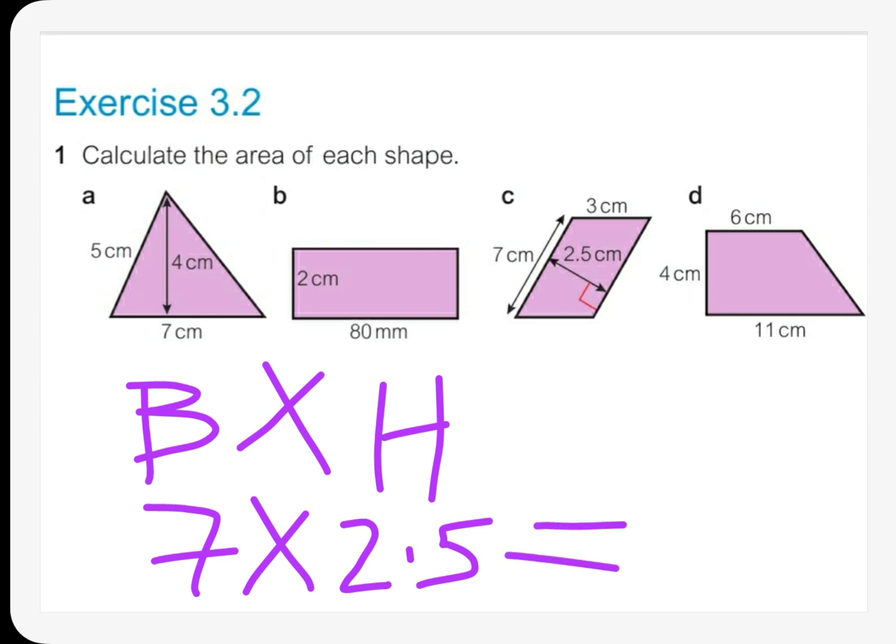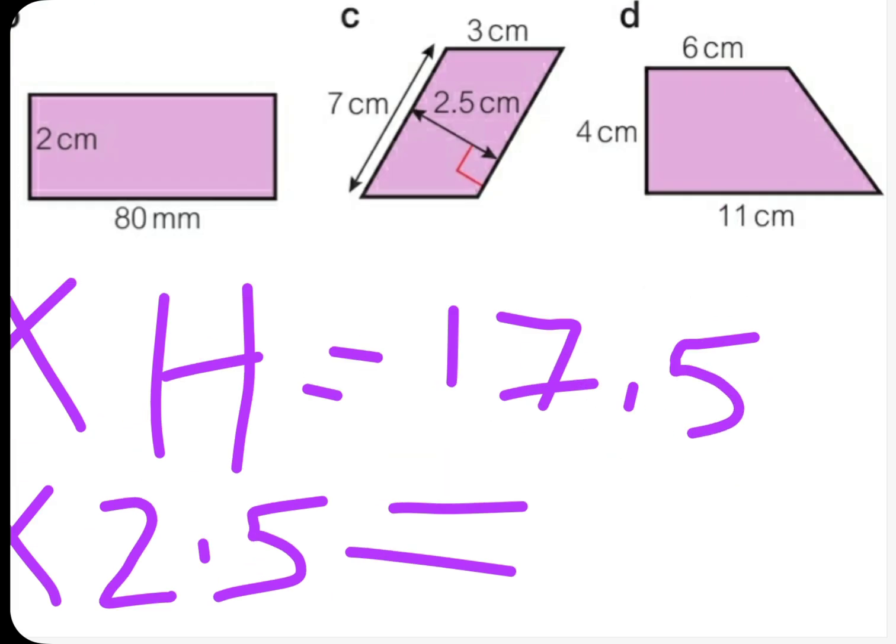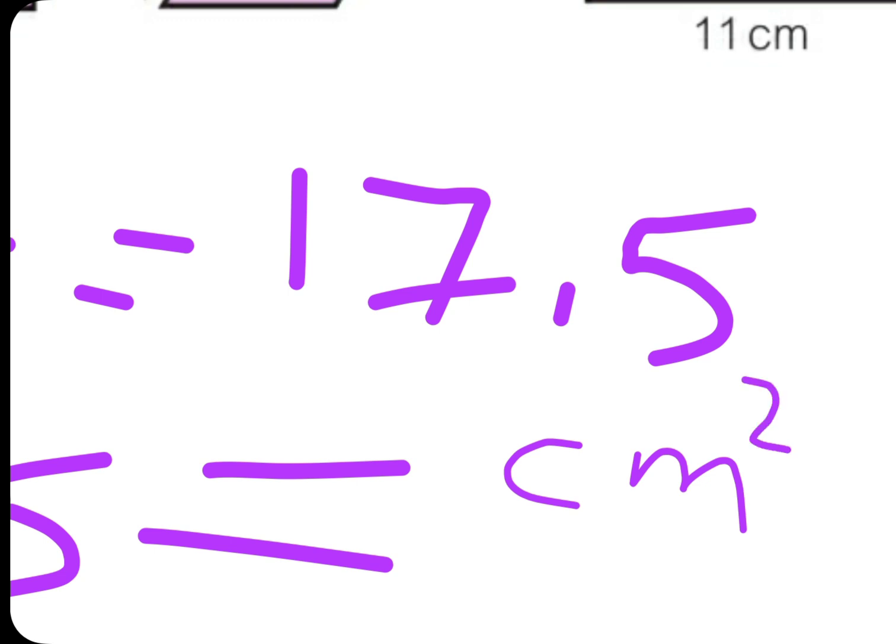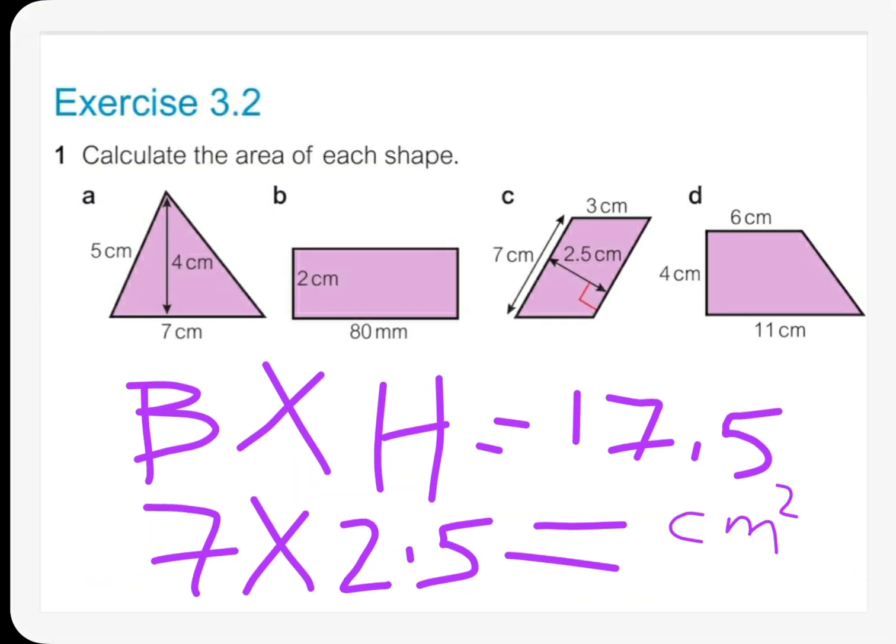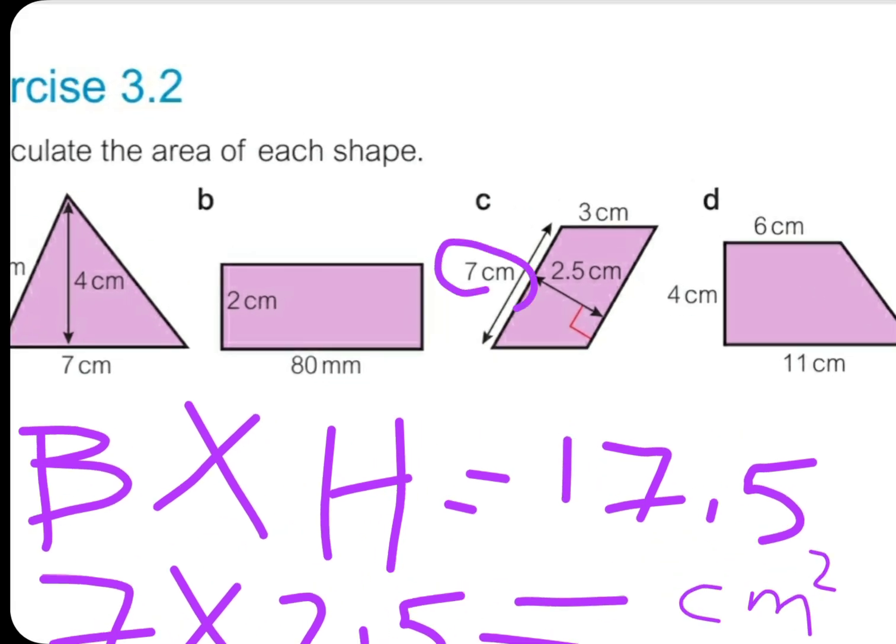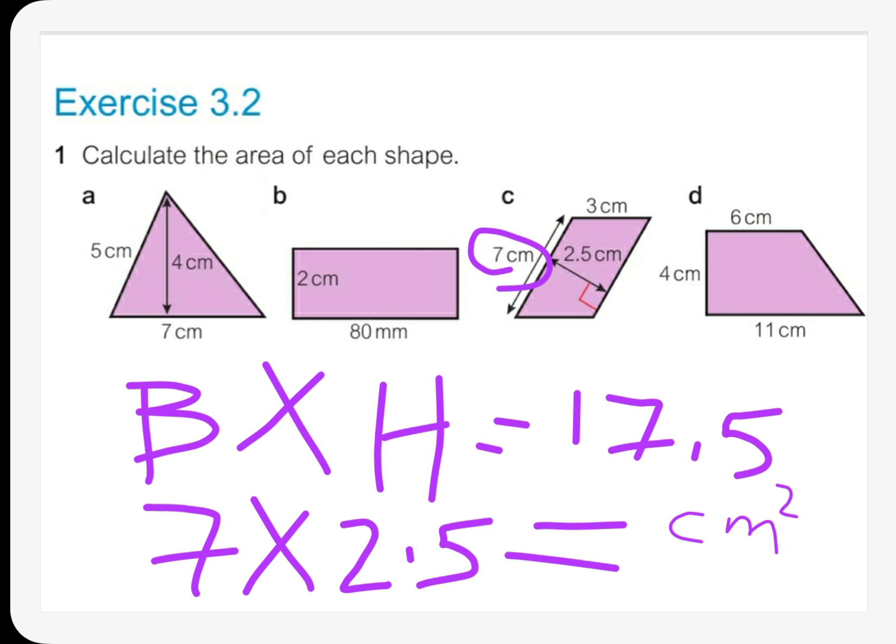It's going to be 17.5. Let me put it here: 17.5, and it has to be centimeter squared. The answer must be centimeter squared all the time with areas.